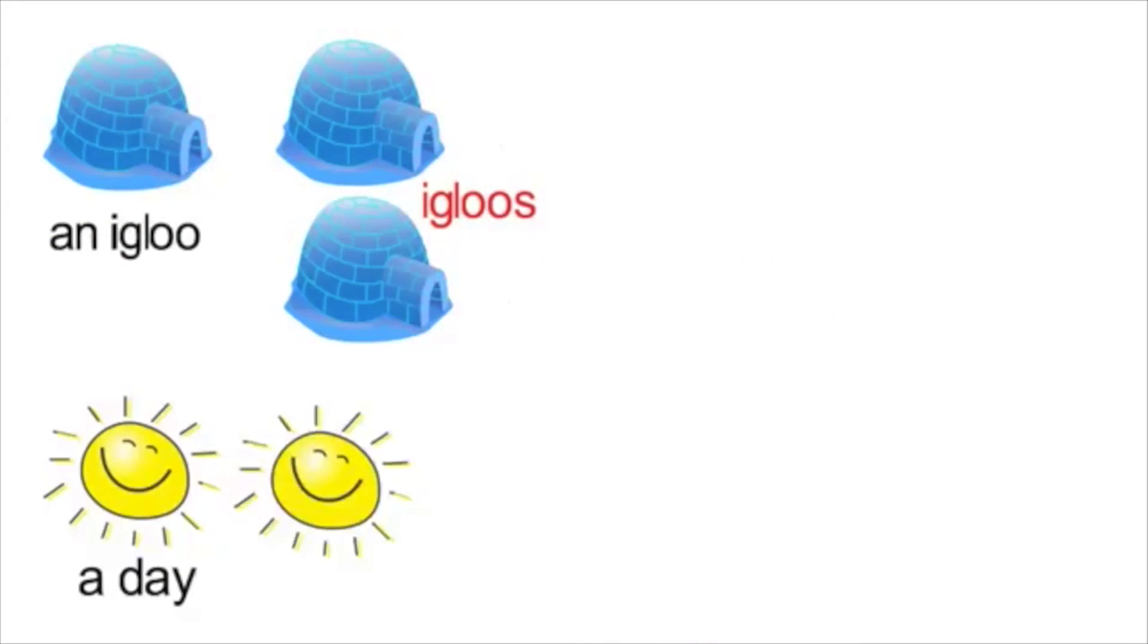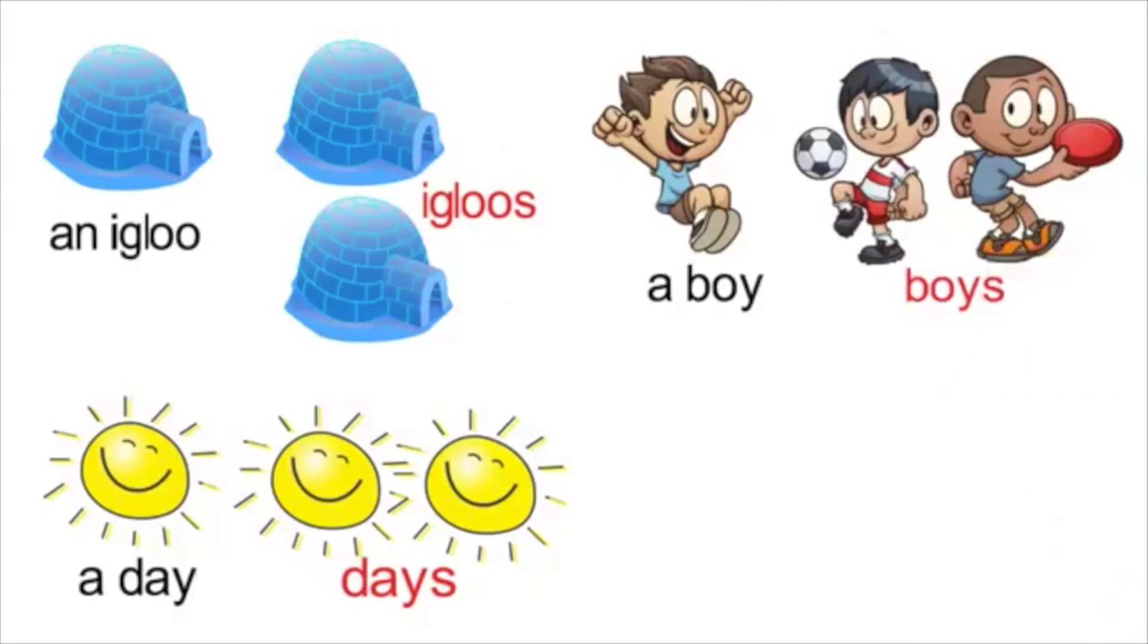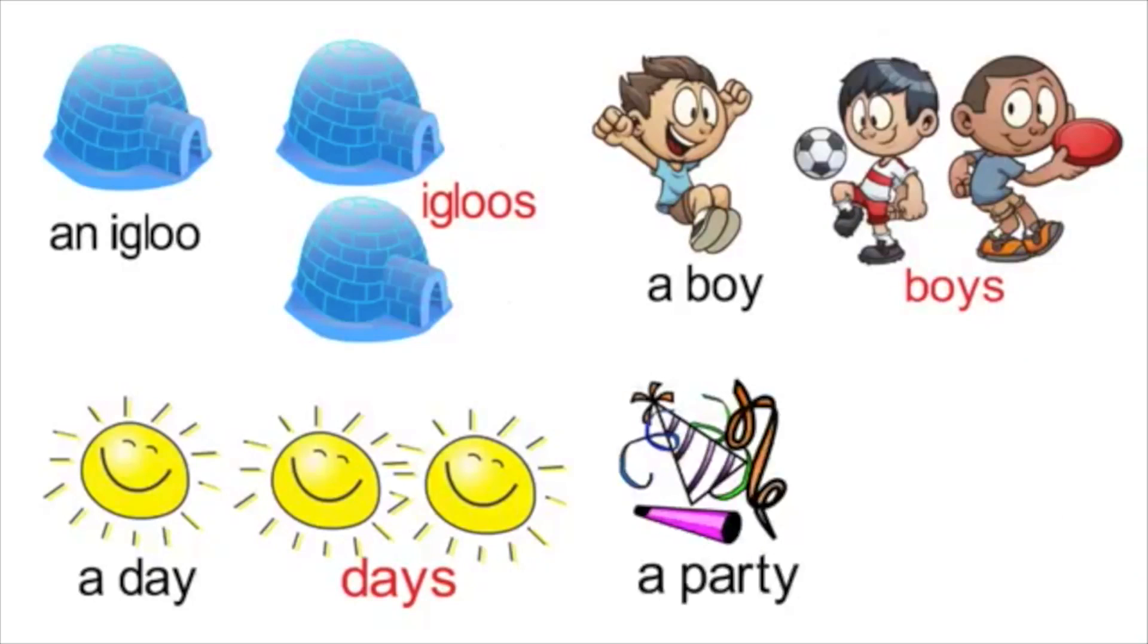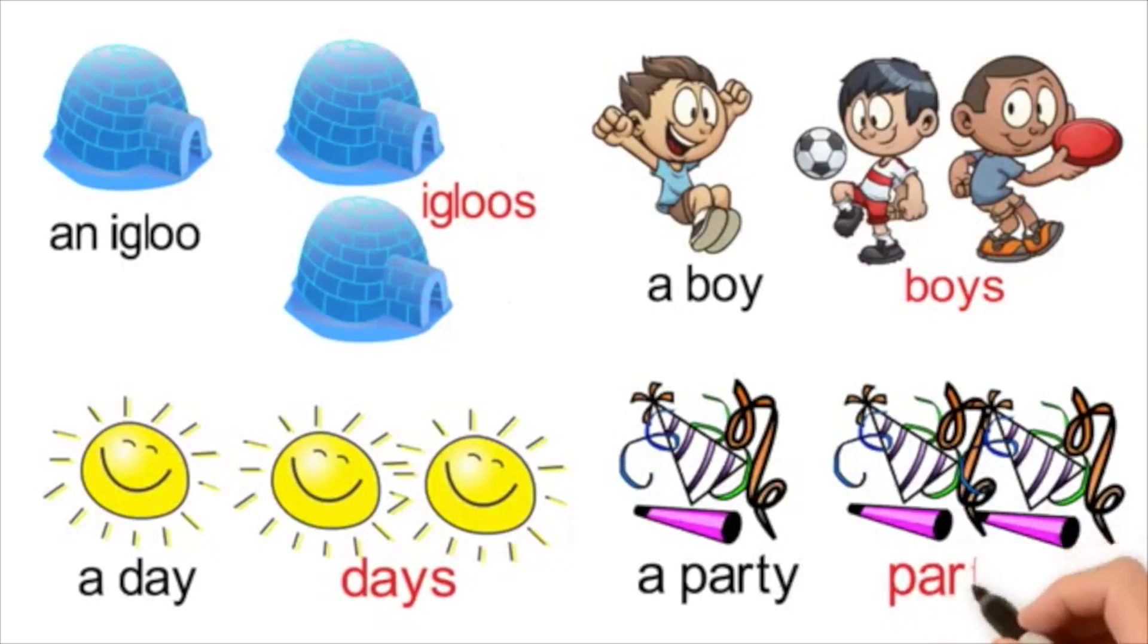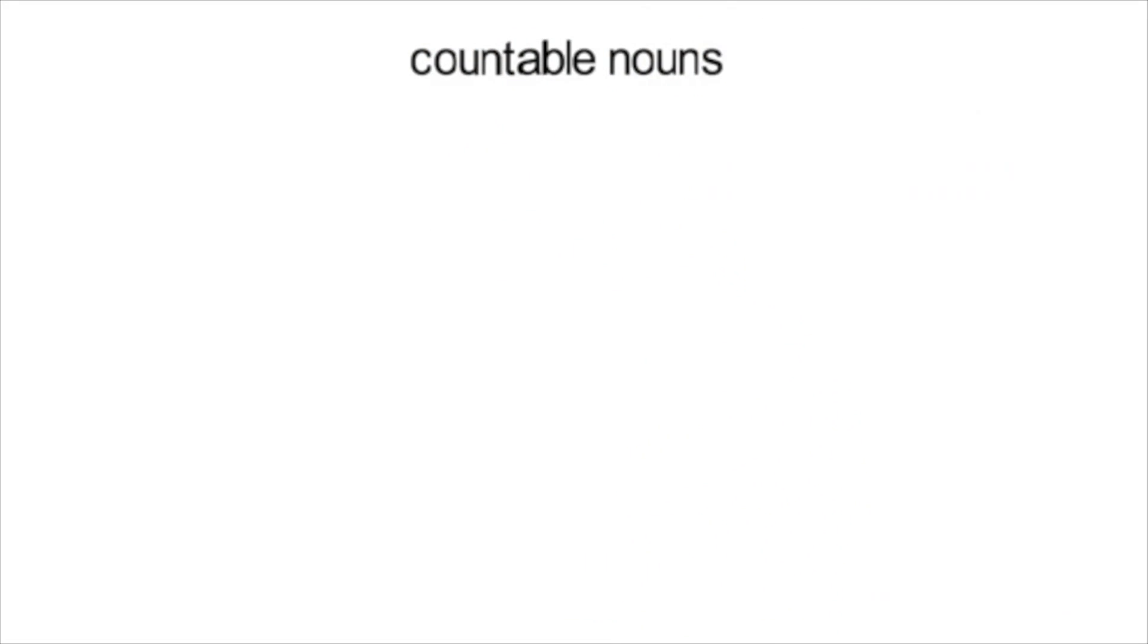A day becomes days, a boy becomes boys, a party becomes parties. Countable nouns can also be made plural with the following quantifiers: many or a few.